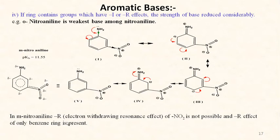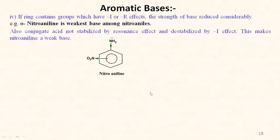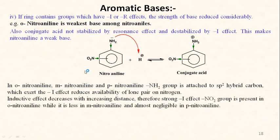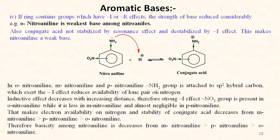In meta-nitroaniline, the electron-withdrawing resonance effect of the nitro group is not possible directly to nitrogen; only the benzene ring shows that resonance effect. The conjugate acid is therefore less destabilized by resonance. The inductive effect decreases as distance increases from ortho to meta. Therefore the basicity order among nitroanilines decreases: meta-nitroaniline > para-nitroaniline > ortho-nitroaniline, since in the ortho case both strong resonance delocalization and strong electron-withdrawing inductive effect are present.